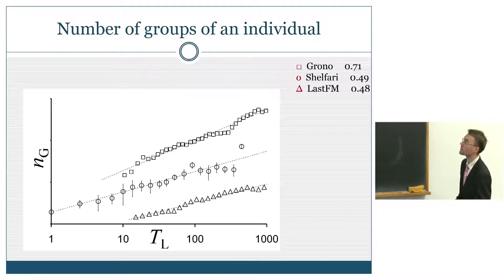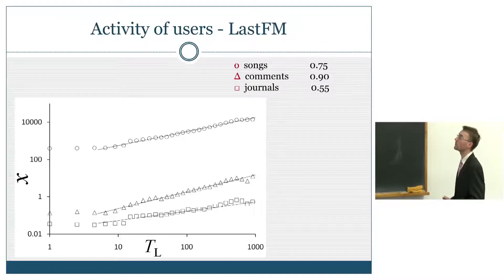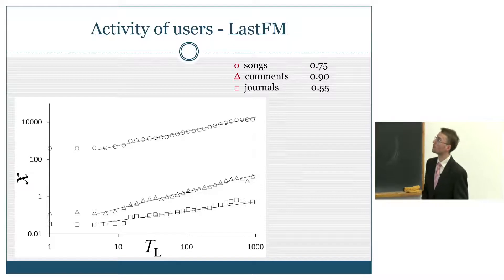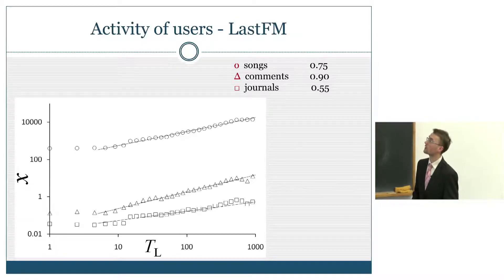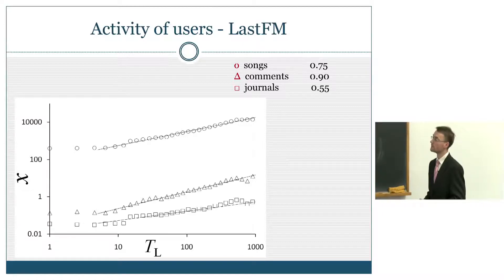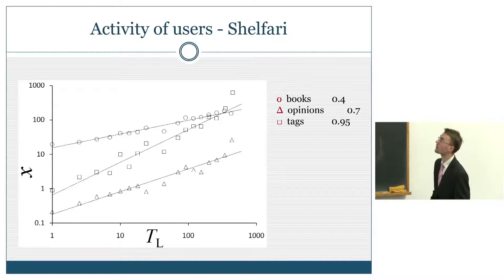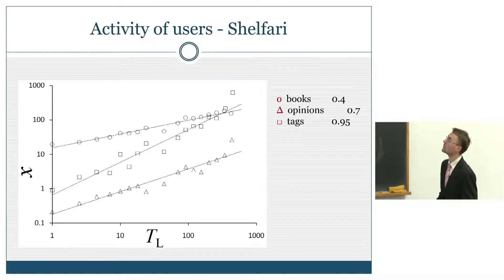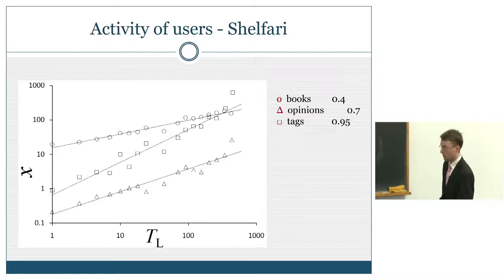Another example is from Last.fm — the number of songs played, number of comments, or number of journals. And here from Sharefari: the number of books, number of opinions, number of tags. All of them evolve in time in a power law manner.